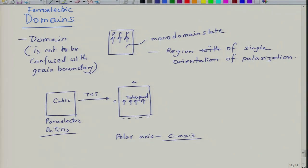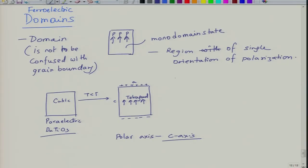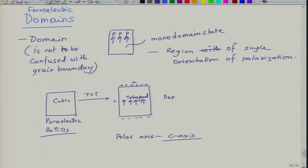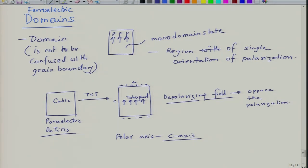For a crystal of the order of 1 cm × 1 cm × 1 cm, this means a massive charge density, which leads to creation of a depolarization field. The depolarization field is something which would like to minimize the surface charge density. This single orientation of polarization sets up a depolarizing field that opposes the polarization.